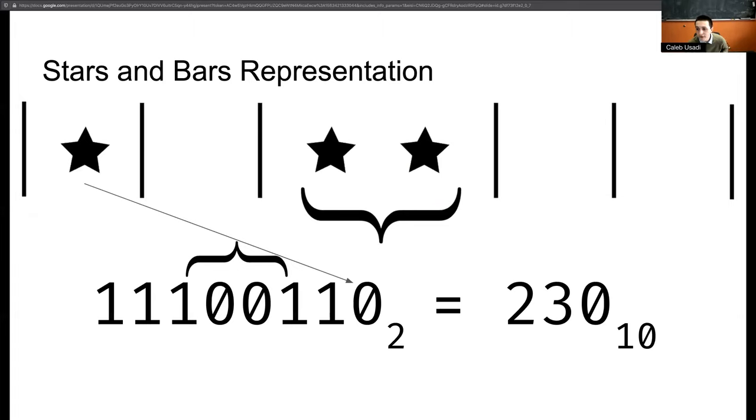We borrowed the stars and bars representation from combinatorics to reduce this factor of the number of sites and again represent each basis vector as a single 64-bit integer as was done with fermionic basis vectors.